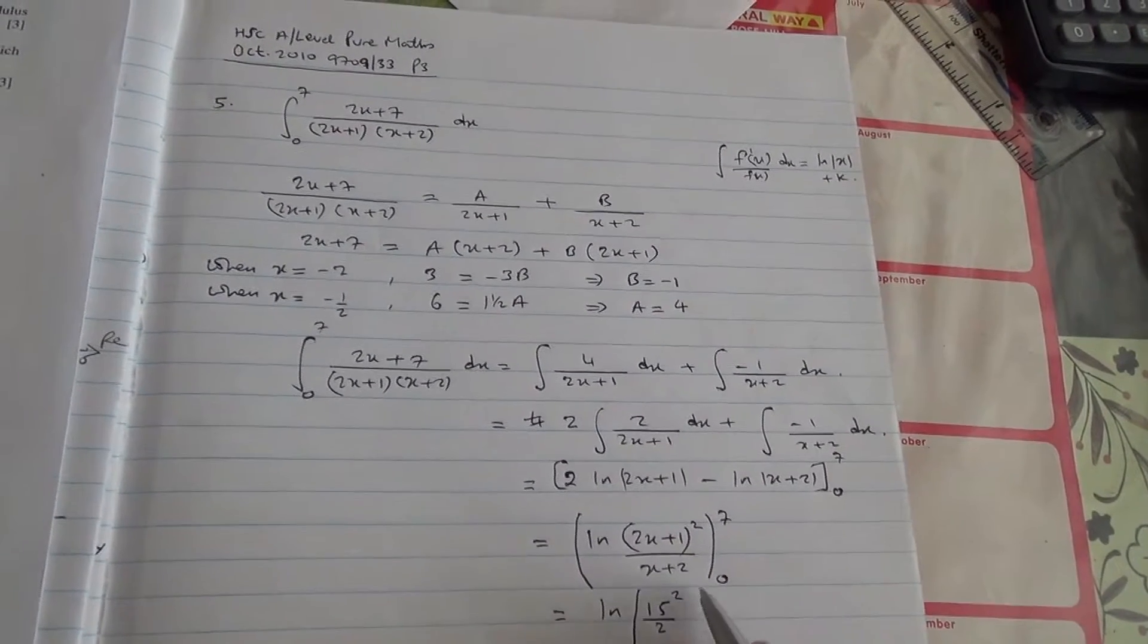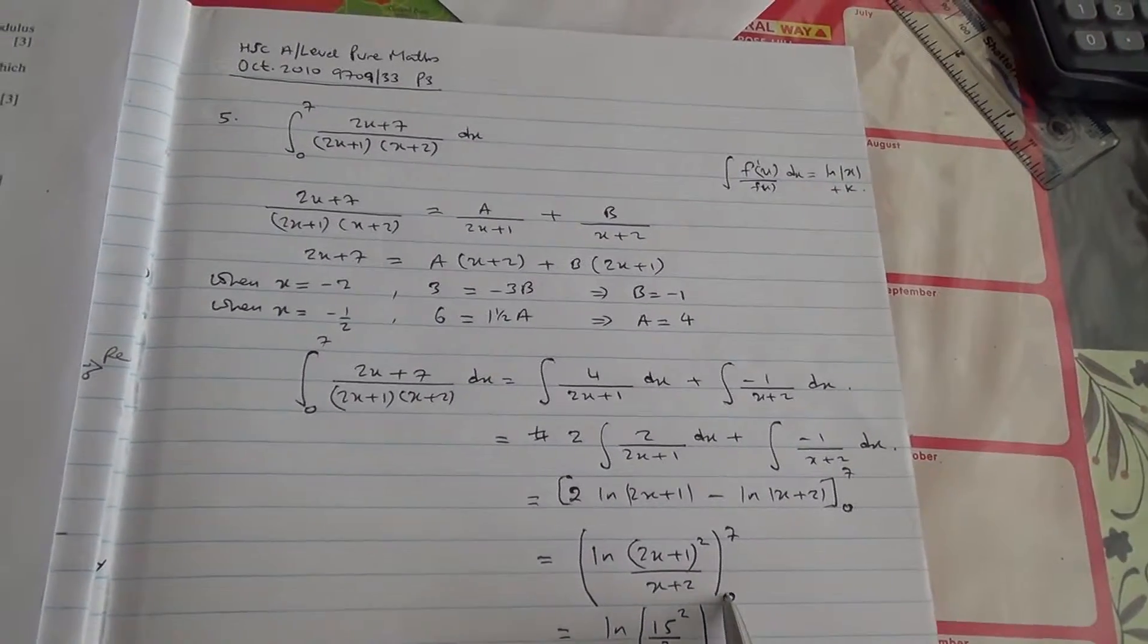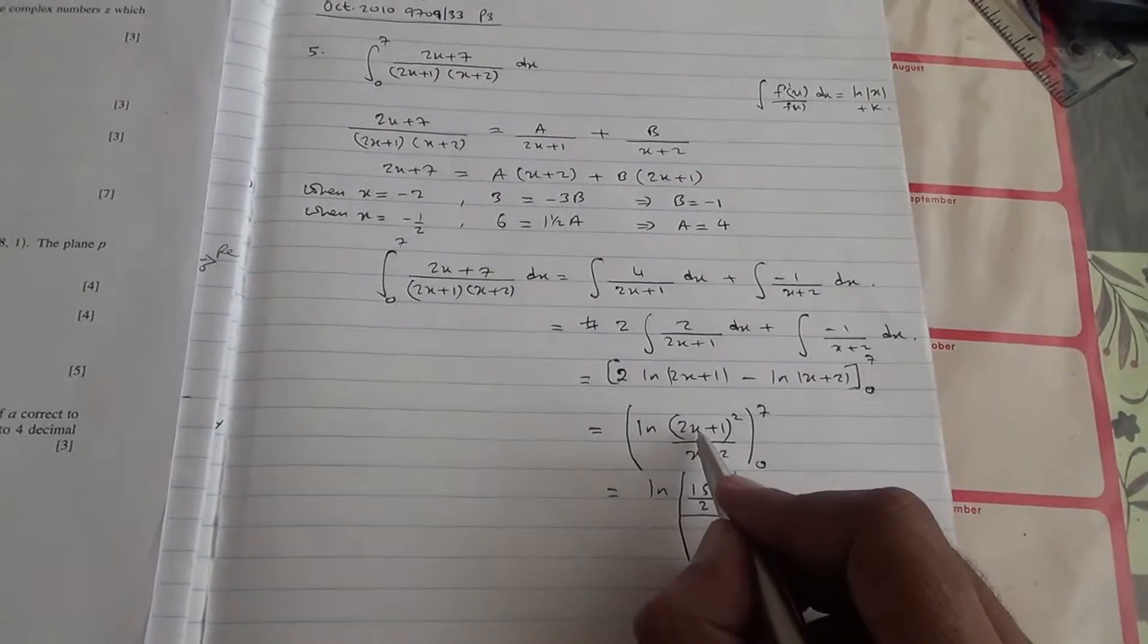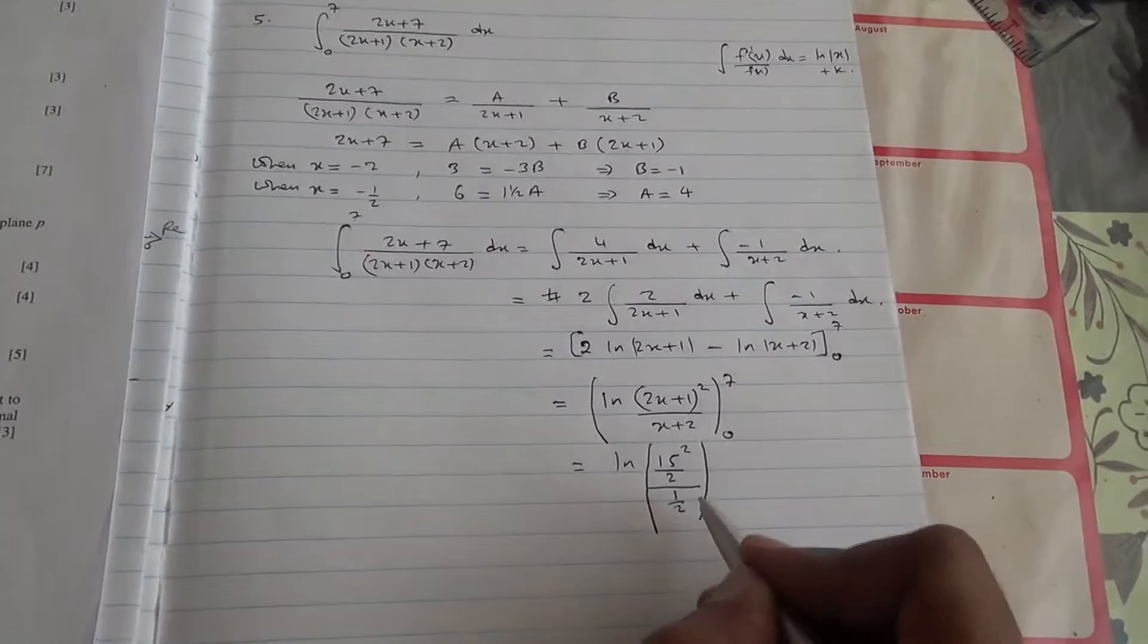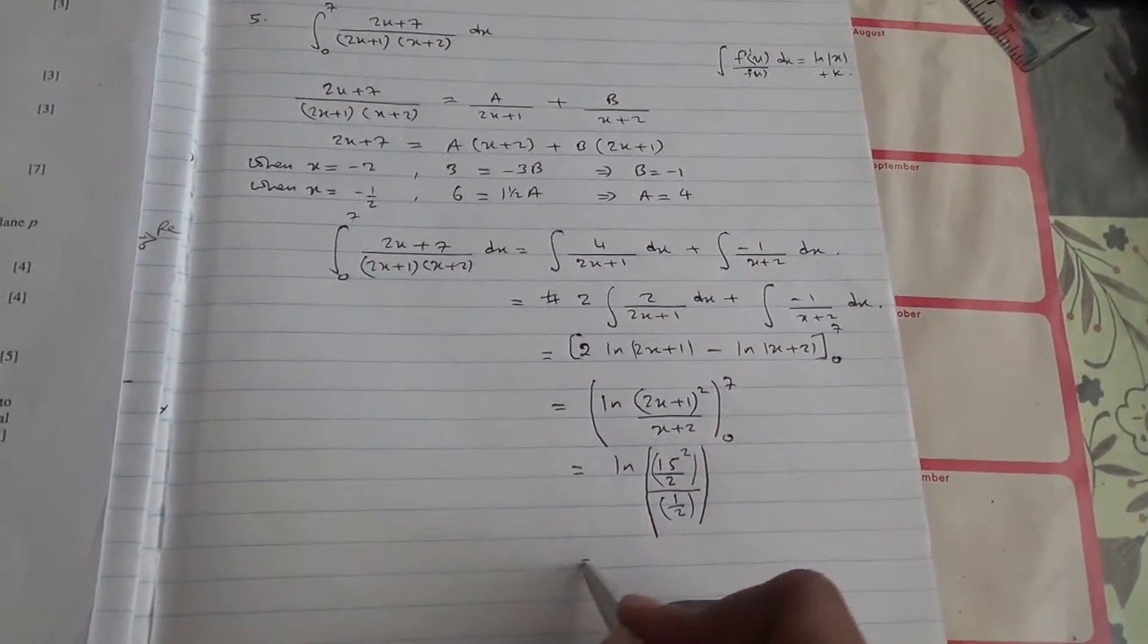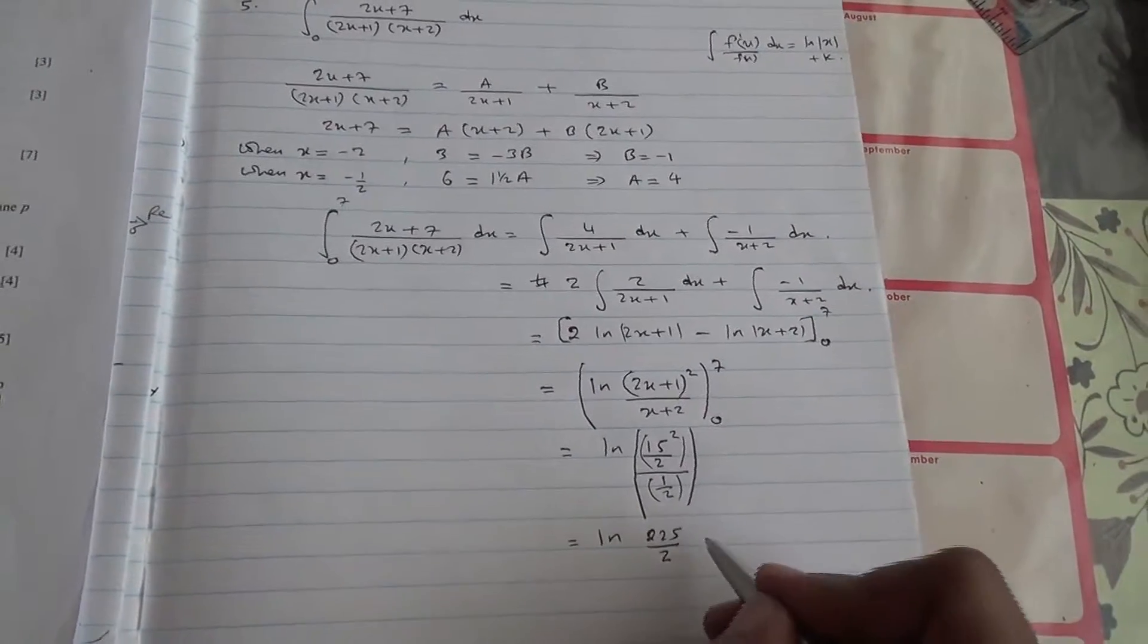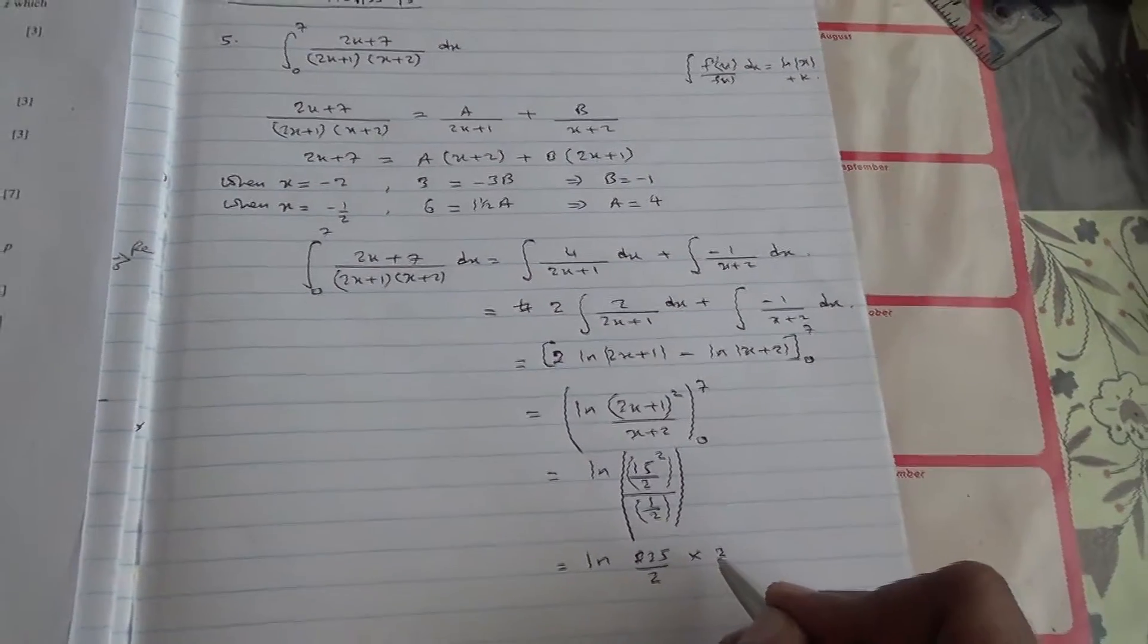Then all of that divided by, now we're 0, so divided by 2 times 0, 0 plus 1 is 1, 1 to the square is 1, 0 plus 2 is 2. So I got then ln 225 over 2, divided by half means multiply by 2 over.